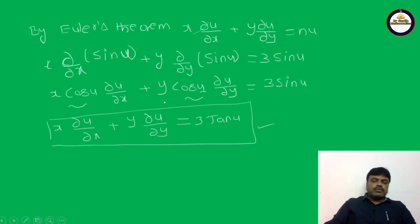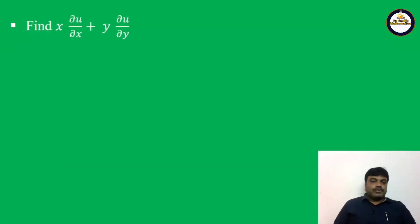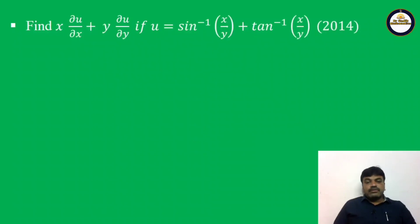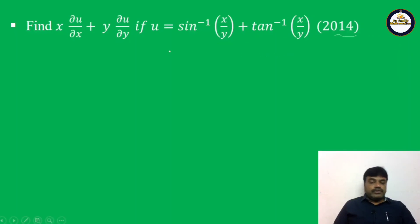Let us see one more problem. Find x·∂u/∂x + y·∂u/∂y if u = sin inverse(x/y) + tan inverse(x/y). This is also an important problem. Previously we had only one function like sin inverse of x²+y²/(x+y), but here we have two terms: sin inverse(x/y) plus tan inverse(x/y). We apply Euler's theorem solution.